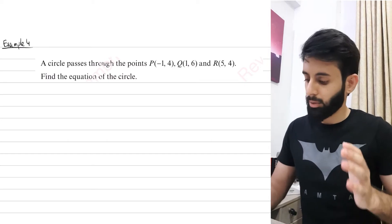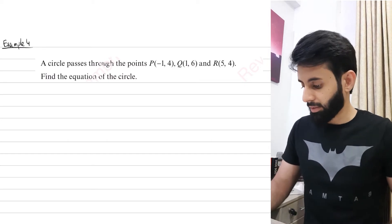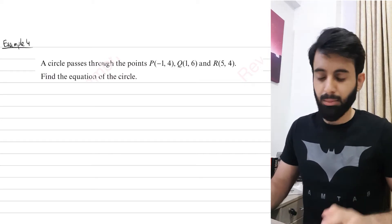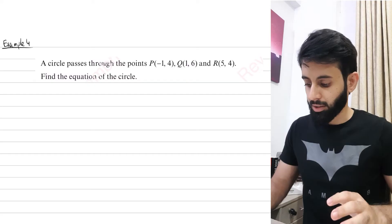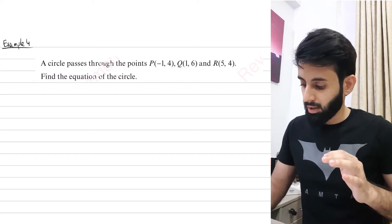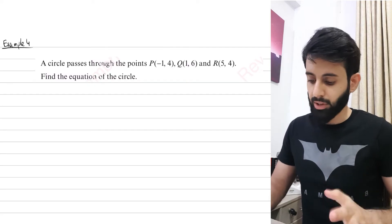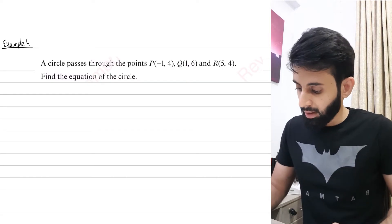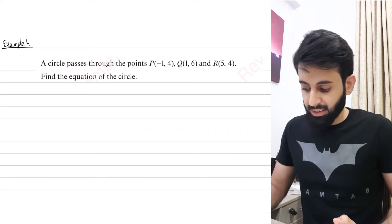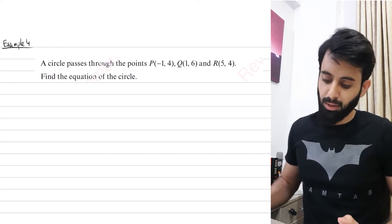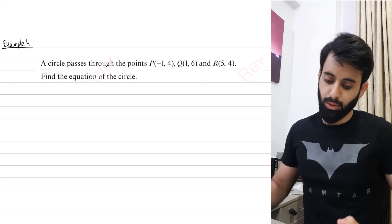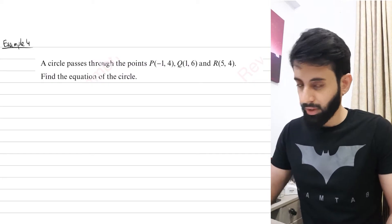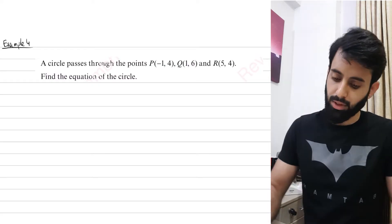In this video we are going to pick up from where we left off and do some more example questions related to equations of circles. The question says a circle passes through the points P(-1, 4), Q(1, 6), and R(5, 4) — find the equation of the circle.